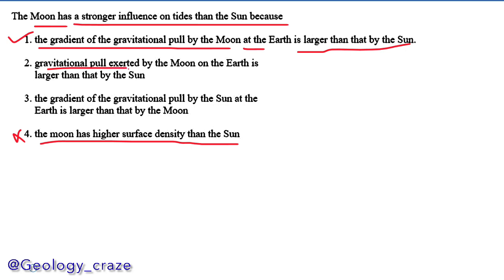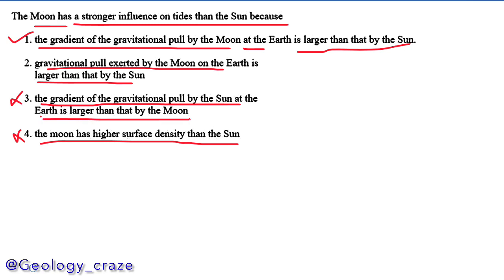Another option says the gravitational pull exerted by the moon on Earth is larger than that of the sun — but the gradient is the main component, not just the total pull. A third option says the gradient of gravitational pull of the sun at Earth is larger — that is wrong. Due to the distance between the sun and the moon from Earth, the moon's gradient is larger. So our right option is: the gradient of gravitational pull by the moon at Earth is larger than that by the sun.